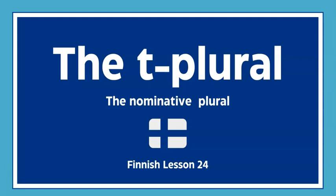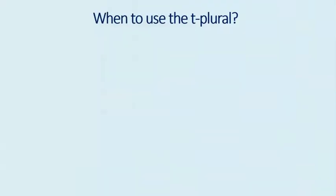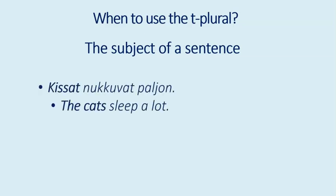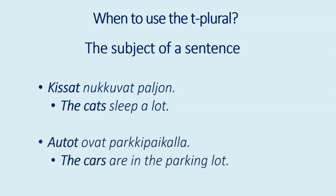Let's start with the use of this form. When to use the T-plural: you can use T-plural as the plural subject of a sentence. In that case, it will appear at the beginning of a sentence. For example, kissat nukkuvat paljon — the cats sleep a lot. Autot ovat parkkipaikalla — the cars are in the parking lot.